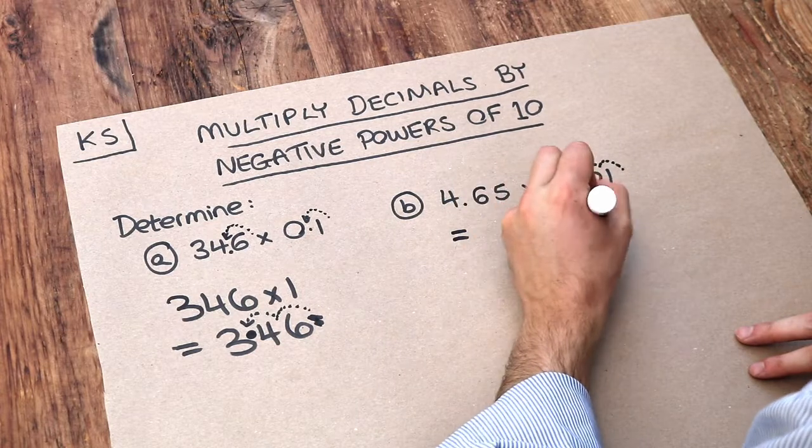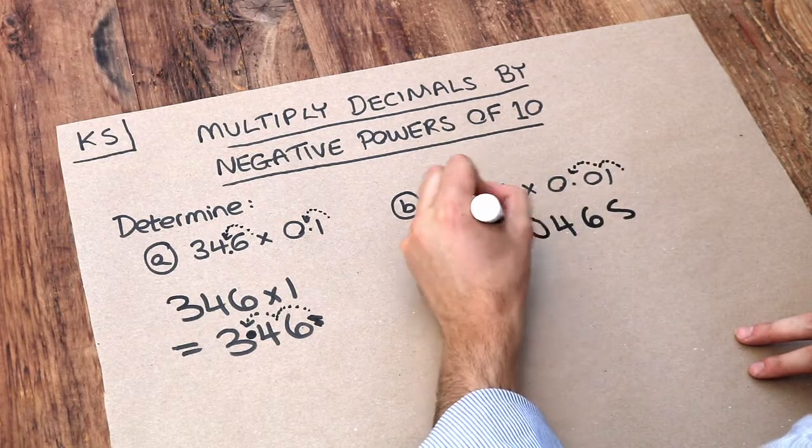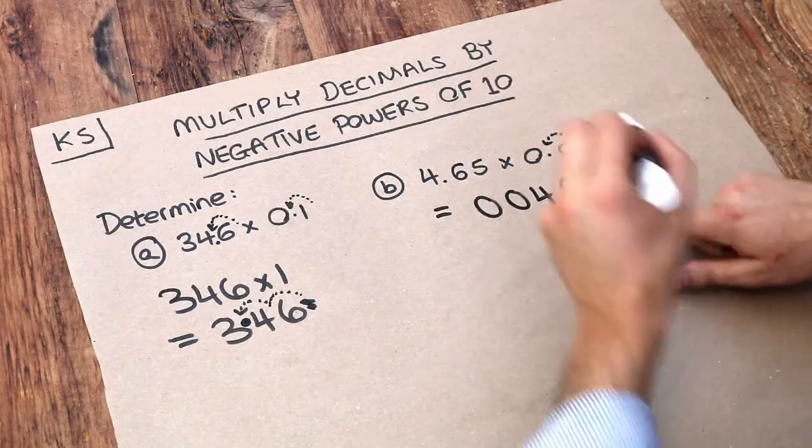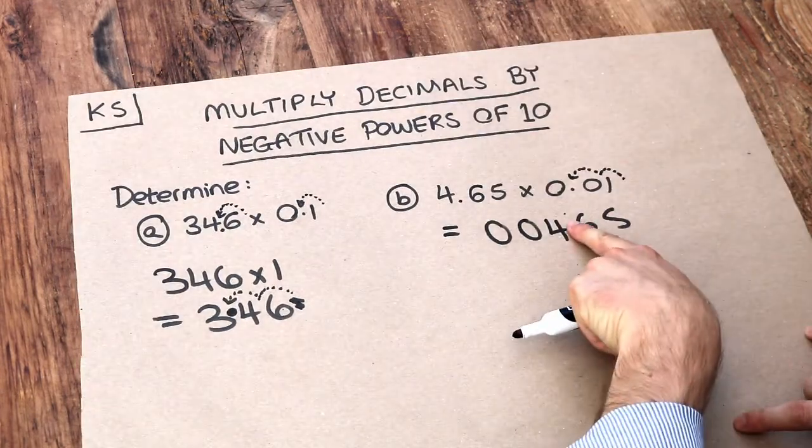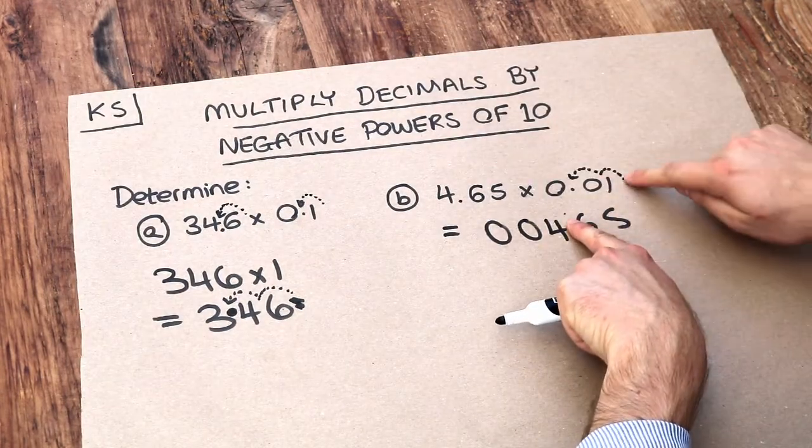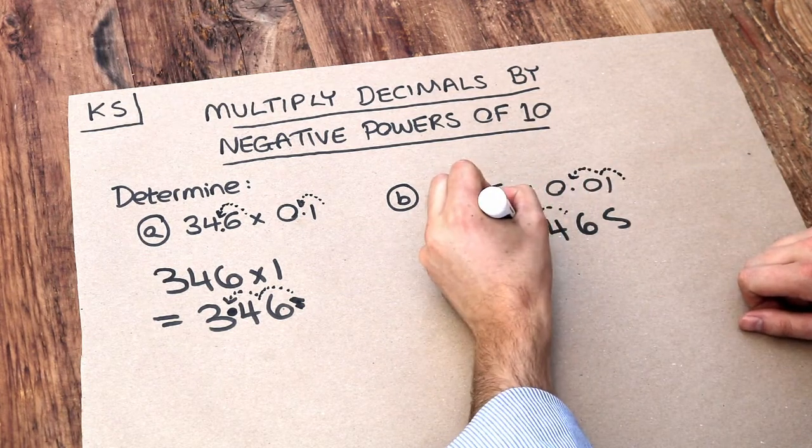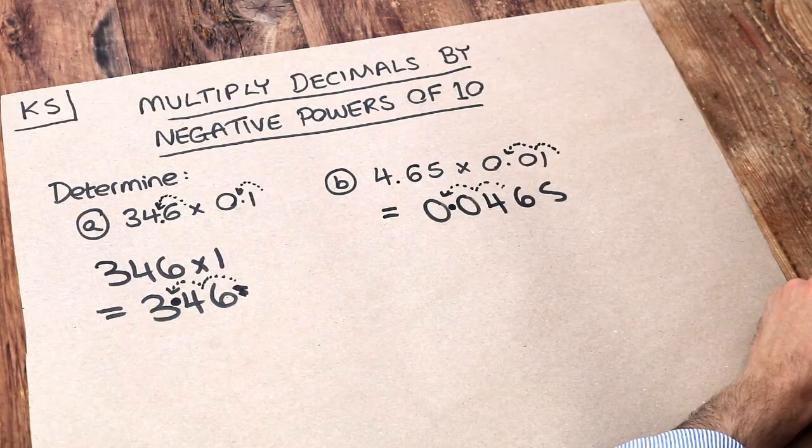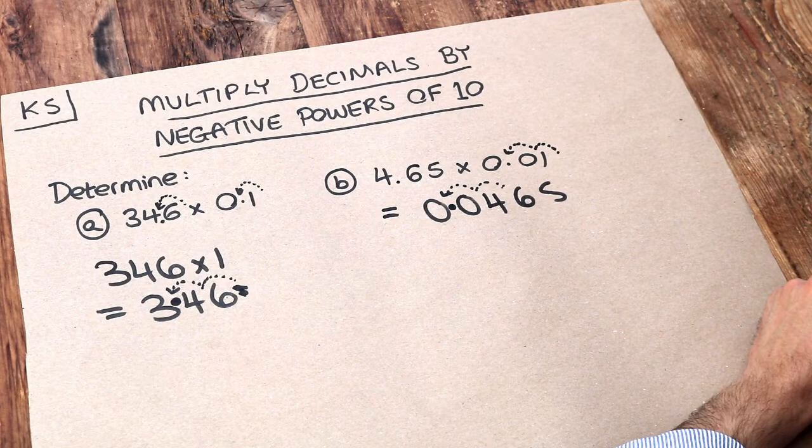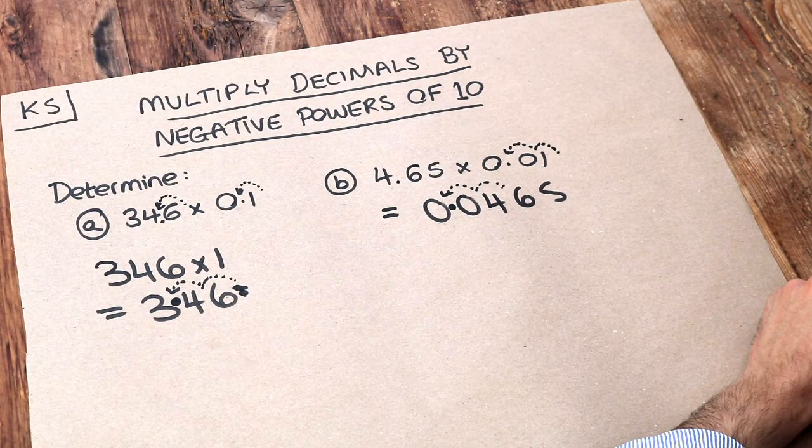So if I put the digits here, and let's put some zeros on the front, now the decimal point is originally here, between the 4 and the 6, and it's going to move two places to the left. So 1, 2, like this, and therefore the decimal point is now going to be here.